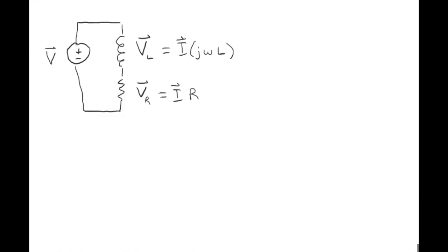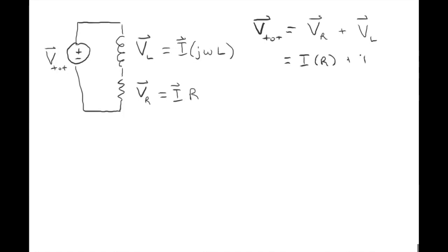Let's call the voltage going across both of them V_total. We know we can use vector addition to see that V_total equals the voltage across the resistor plus the voltage across the inductor. Plugging in the equations, we have i·R for the resistor and i·j·ω·L for the inductor. Factoring out the i, we see we have a real part R plus a complex part j·ω·L.